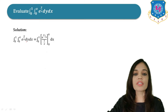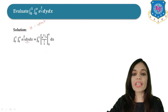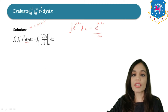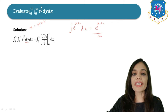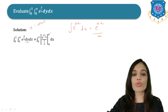Here we have to evaluate the integral with respect to y first, keeping x as constant. Applying the formula: the integration of e^(ax) dx = e^(ax)/a. Here 1/x is constant, so we get the integral as e^(y/x) divided by (1/x), with limits 0 to x.